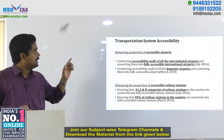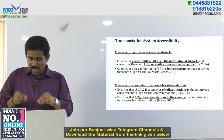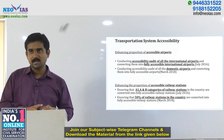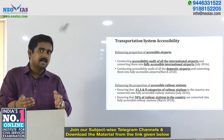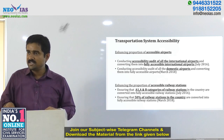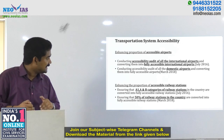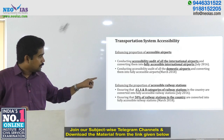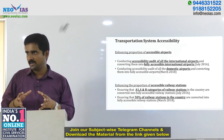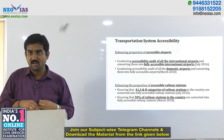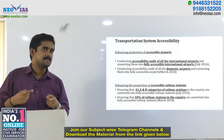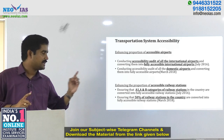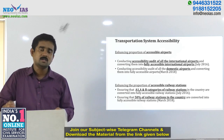Under transportation system accessibility, the initial objective for accessible airports was to conduct auditing and ensure accessibility of international airports, subsequently extending to domestic airports by March 2018. For railway stations, the initial focus was on A1, A, and B category stations classified by traffic volume. Subsequently, 50% of all railway stations in the country were to be converted into fully accessible railway stations by March 2018.